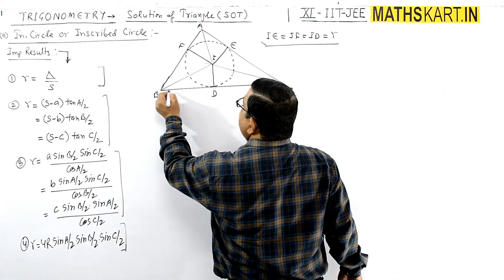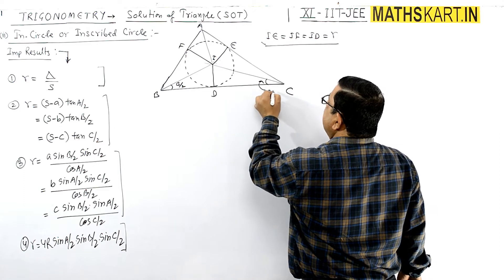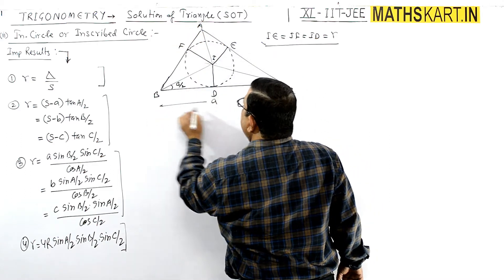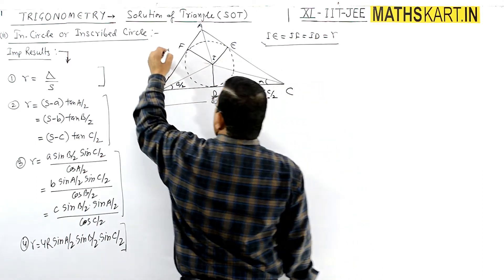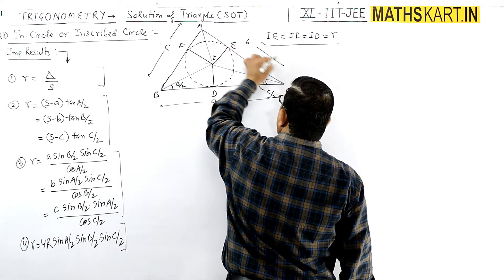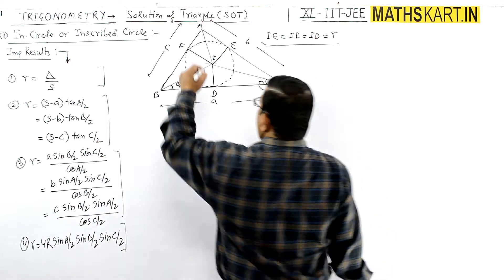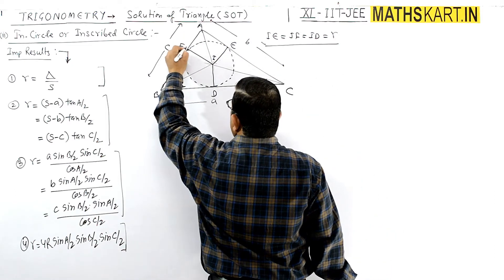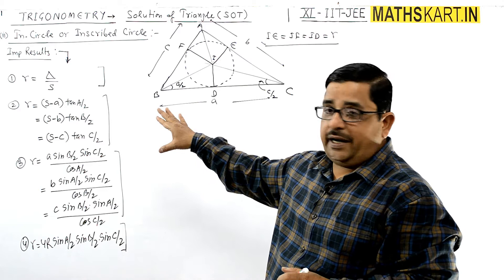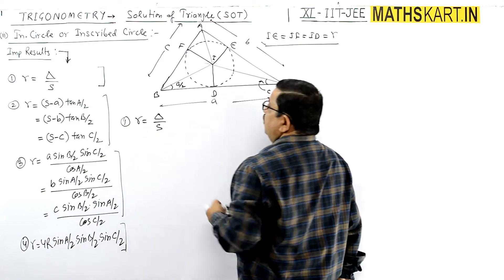The angle at vertex B is B/2 because the angle bisector is drawn, similarly angle C gives C/2 at vertex C, and angle A gives A/2 at vertex A. The three sides of the triangle are side a (opposite A), side b (opposite B), and side c (opposite C). Now we have to prove the formula r equals delta by s.